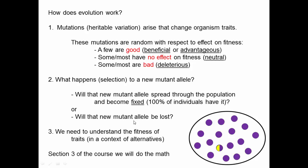In order to figure out what the chances are that alleles are fixed or lost, we need to understand the fitness of traits in individuals, and in particular in the context of alternatives. What is the fitness of a yellow allele in a population where all the individuals have other alleles? In section three of the course, when we do population genetics, we'll do the mathematics of this.